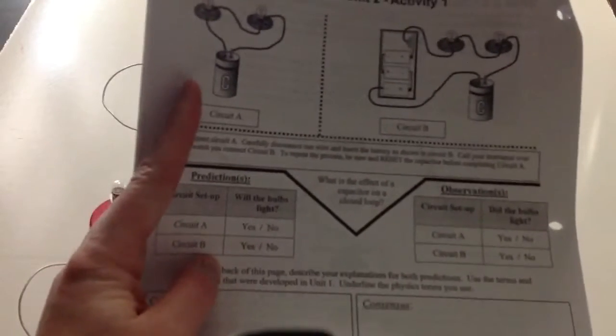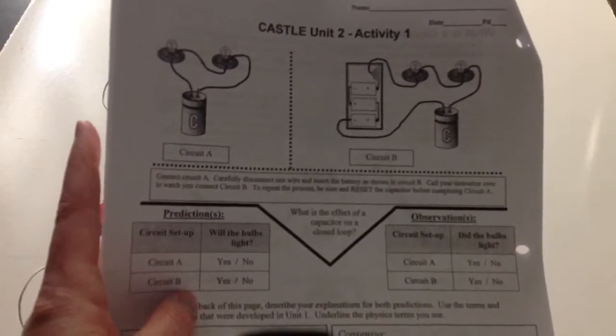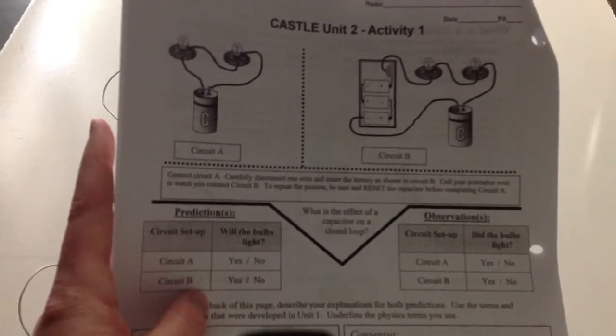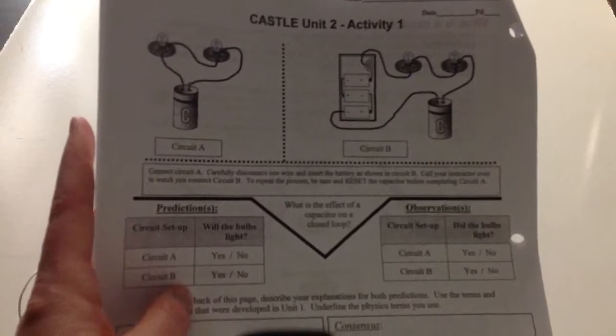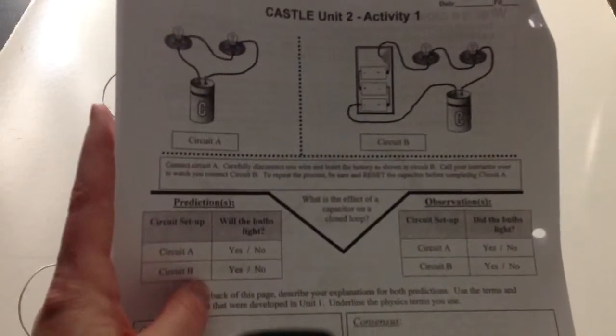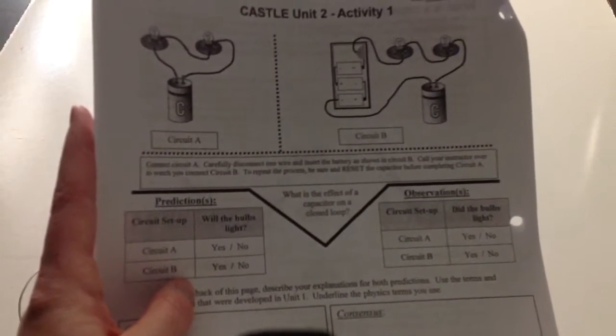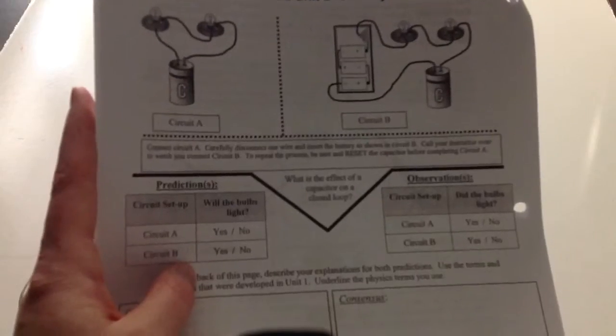So that's what this object with the C is. So we're going to set up these two circuits, circuit A and circuit B. When we set up circuit A, we're going to make sure that our capacitor is reset, meaning that we've touched both of those top pieces with some metal. So predict whether or not both of these setups will create light in the bulbs or not, and then we will actually do it.